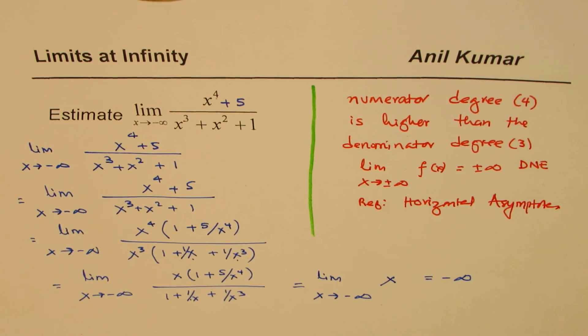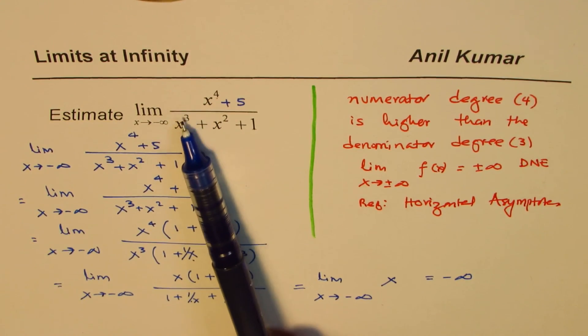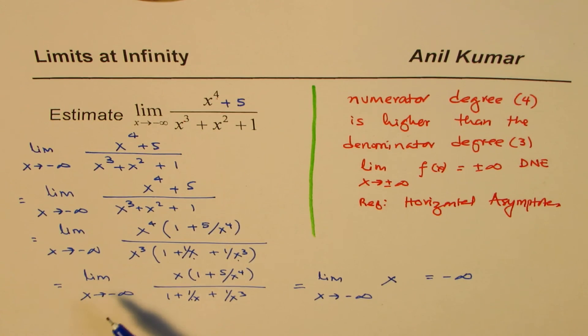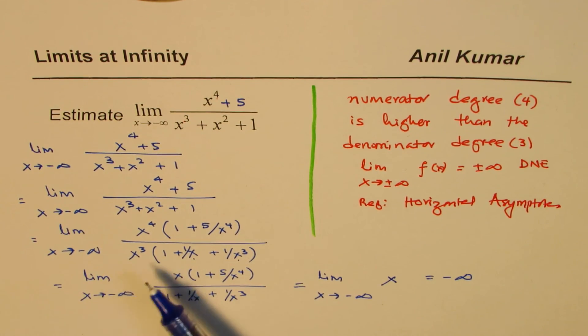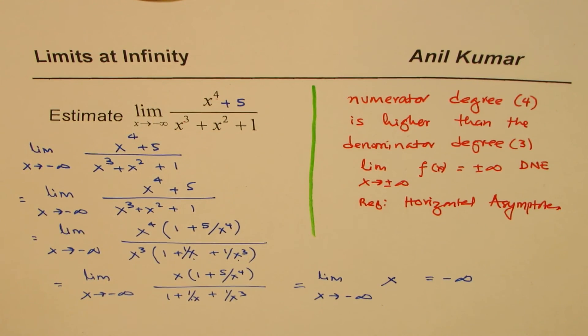But anyway, I think you've understood the process. So the idea is just factor out the highest degree of x from both numerator and denominator. Cancel whatever you can. And then see for a high value what happens. And you'll get your result. So that could be adopted for any rational function for which you want to find limits at positive or negative infinity.